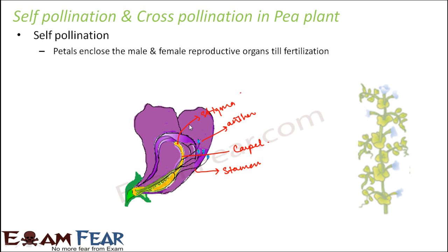As a result of fertilization, seeds were produced and those seeds were again planted to generate the next generation. When the next generation was formed, self-pollination happened again within the petals, and this process kept on continuing. This continual process helped Mendel to self-pollinate plants for many generations. This is how self-pollination was being done with the pea plant.